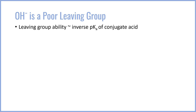The first thing we should address is why OH- is a poor leaving group. Leaving group ability is essentially related to the inverse of the pKa of the conjugate acid — the lower the pKa of the conjugate acid, the better the leaving group. The pKaH for Cl- is negative 6.3, which is very low, so Cl- is a very good leaving group because HCl is a very strong acid. Conversely, the pKaH for OH- is 14, because the pKa of water is 14.